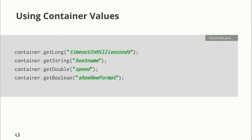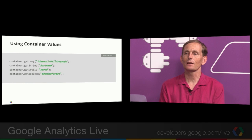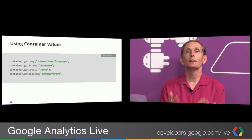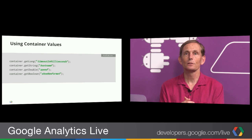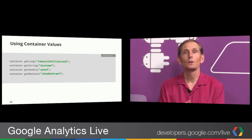Once you have a container, there are four basic calls: get long, get string, get double, or get Boolean. You provide a string and it gives you back something of the same type. So if you have specified, for instance, your timeout for talking to a back-end host in milliseconds, call Container.getLong and that will return that value — the latest and greatest value that has been set up on the website. One thing to point out is that when you're calling getLong or any of these get calls, there's no network communication happening. The network communication has already happened, we downloaded the entire container, and now we're just doing local calls. So these are not terribly expensive calls.